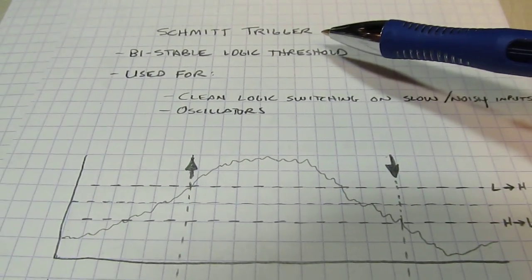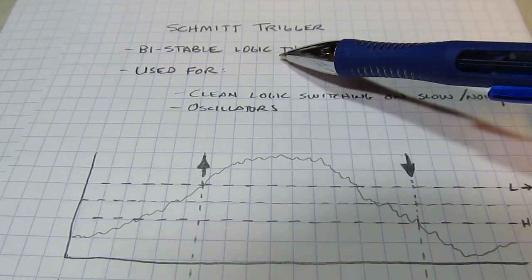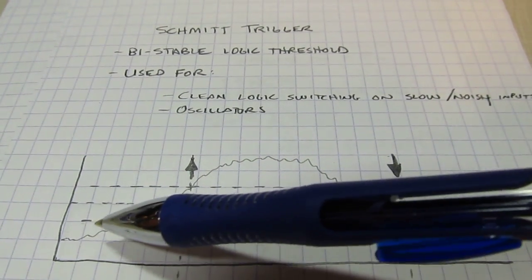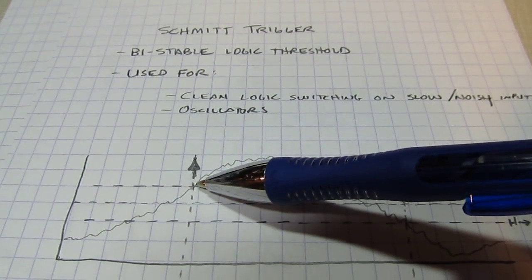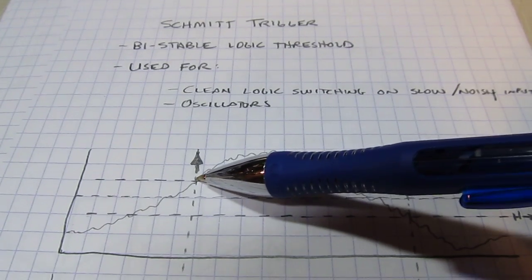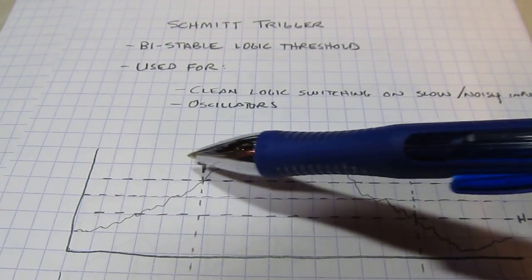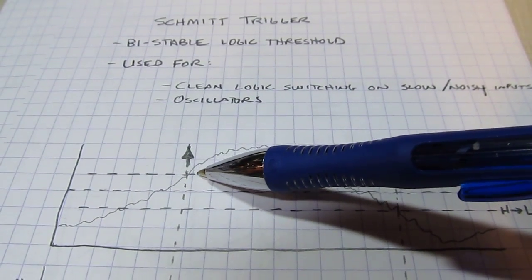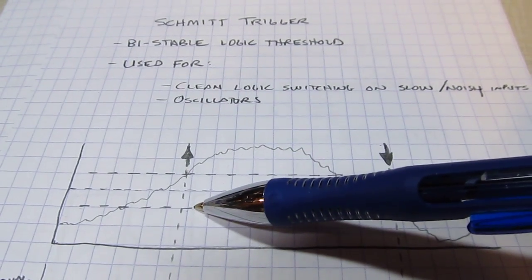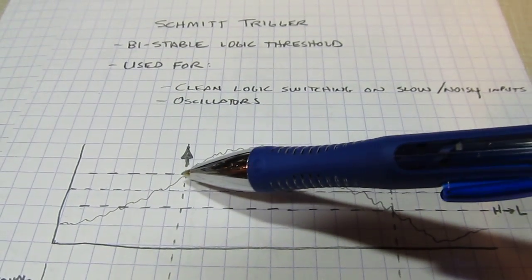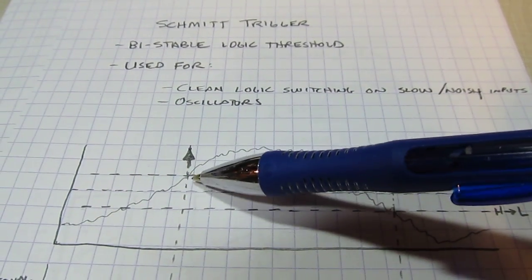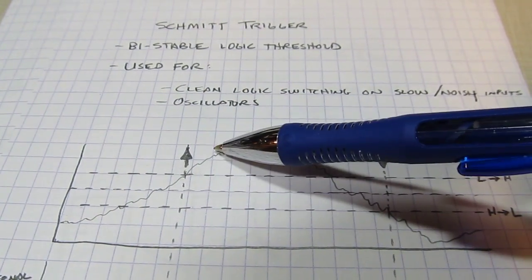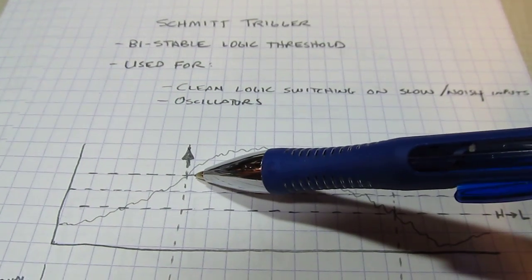So what the Schmidt trigger does, it has a logic threshold that changes. So let's say if the logic state is false, like it is here, the signal will have to come up through this upper threshold here. And once it does that, and the logic state changes, say, from false to true or zero to one, as soon as that state changes, the logic threshold moves from here down to here. So that even if we have a little bit of noise here, as soon as we crossed it once, that threshold moves down to here. So any little noise or wiggle that happens here does not cause any further changes in the logic state. Hence, we get no chatter.